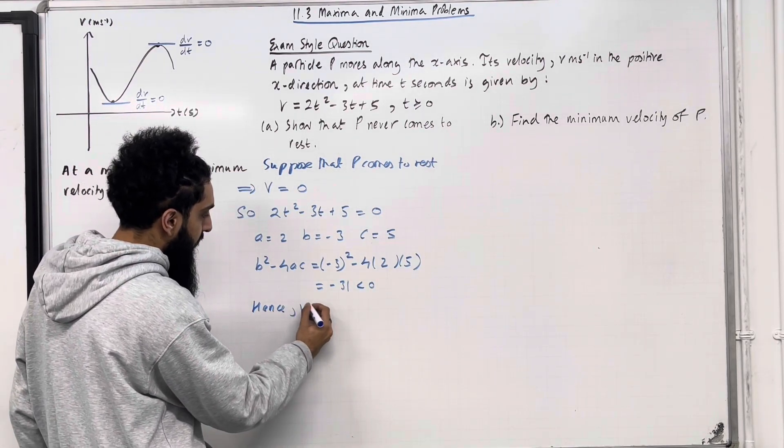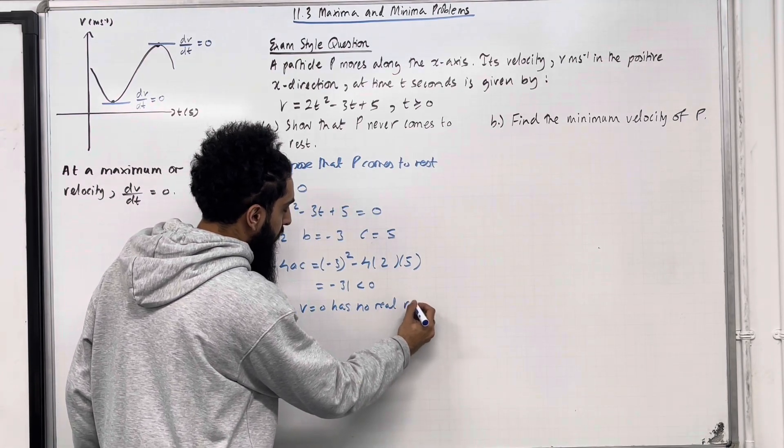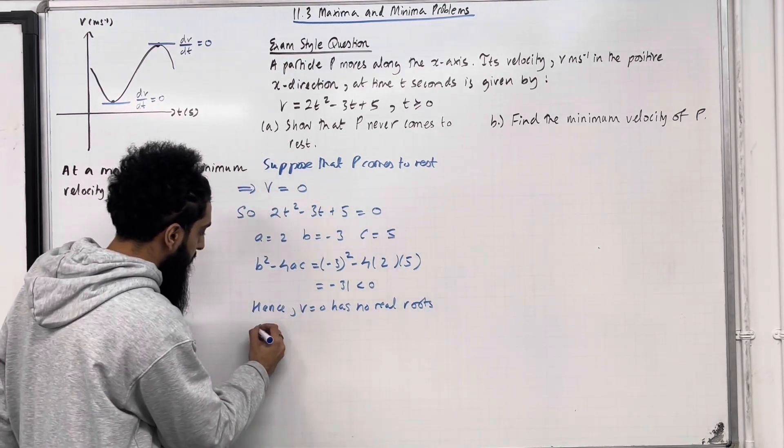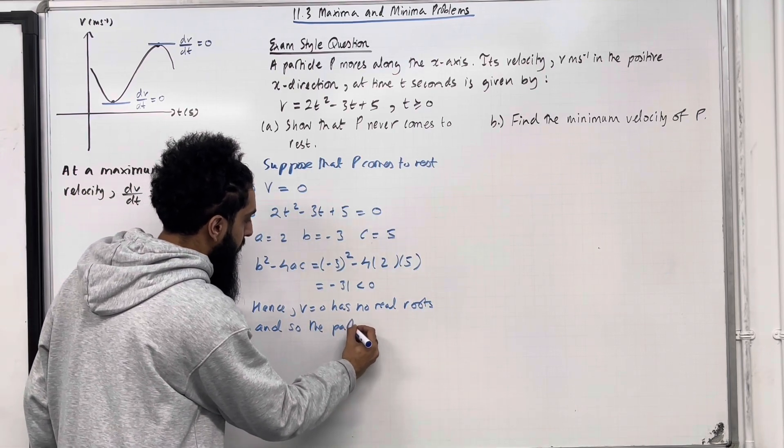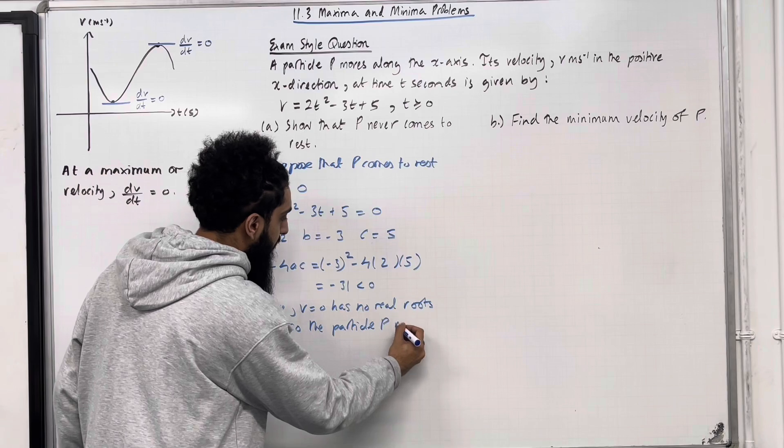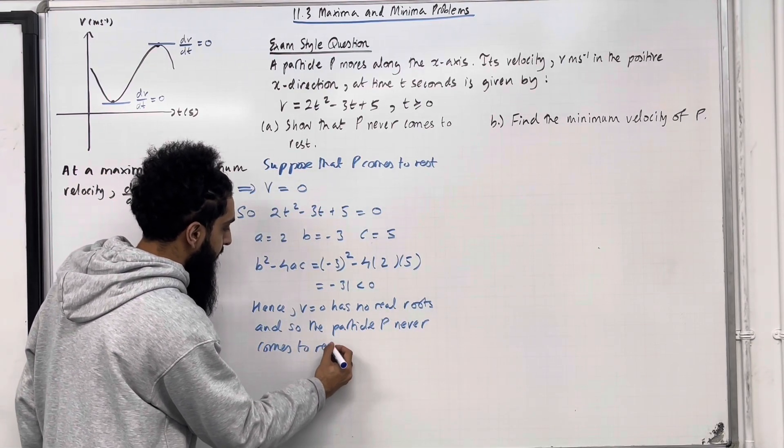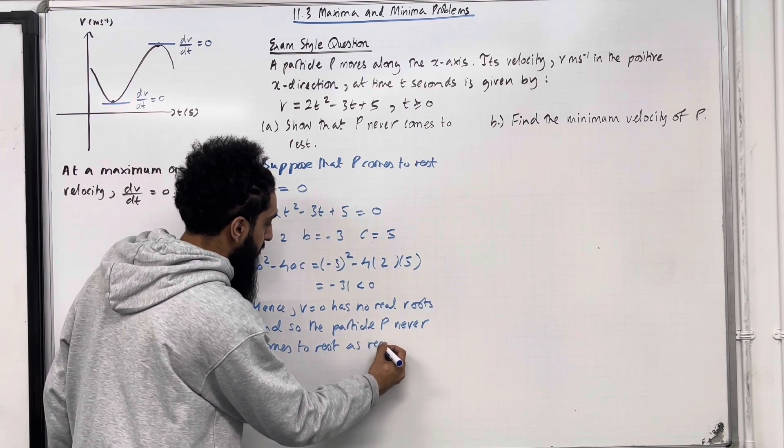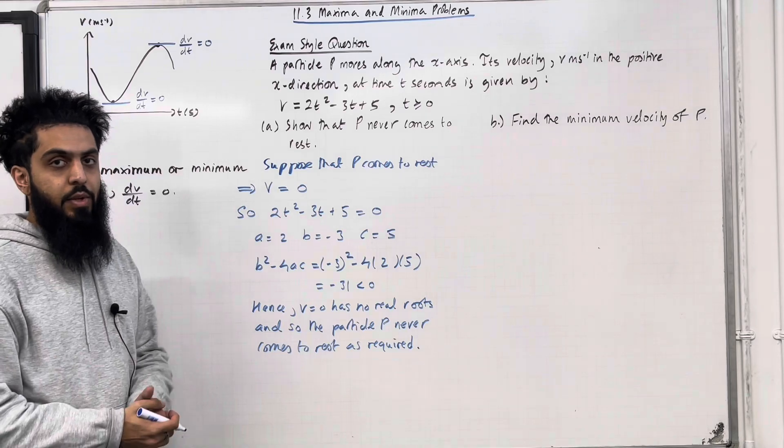Hence, v = 0 has no real roots, and so the particle p never comes to rest as required. That completes part A of the exam-style question.